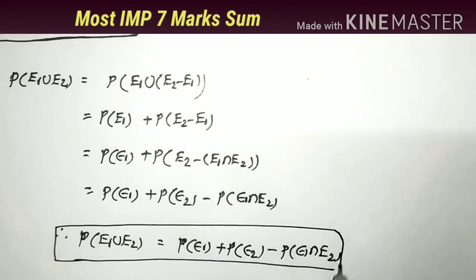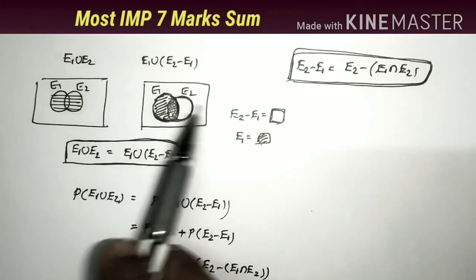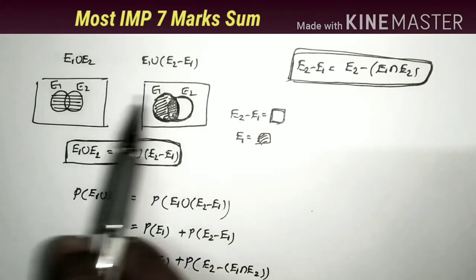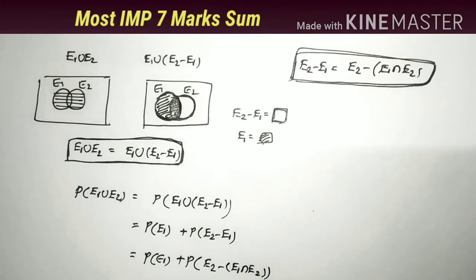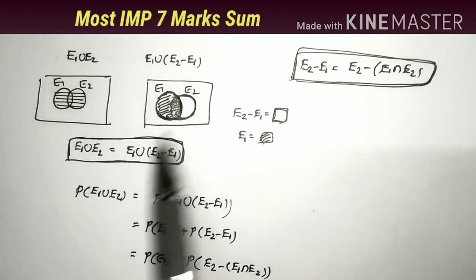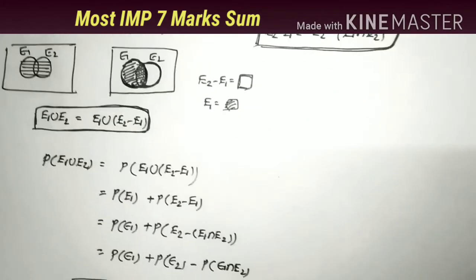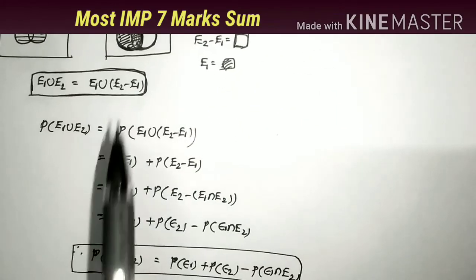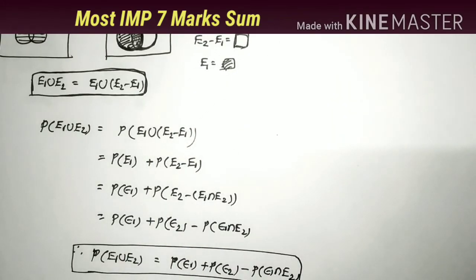This is a very important theorem. The Venn diagrams were shown only for understanding purposes; they don't need to be drawn in the exam. However, the two formulas used in Case 2 must be remembered to solve the proof. That's all.